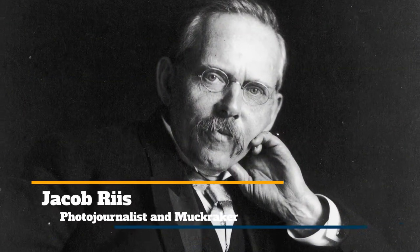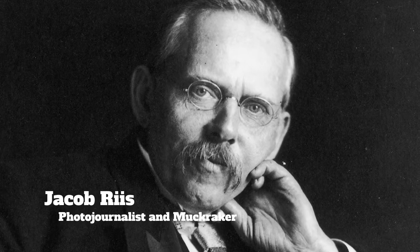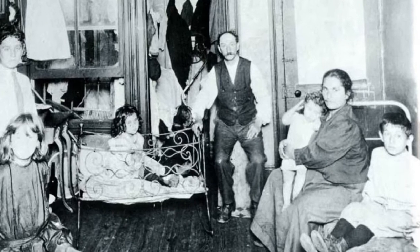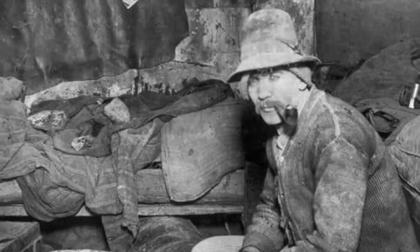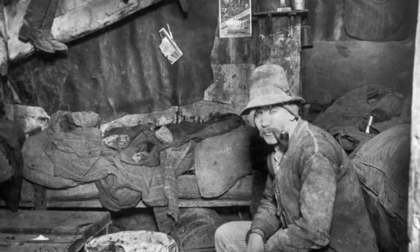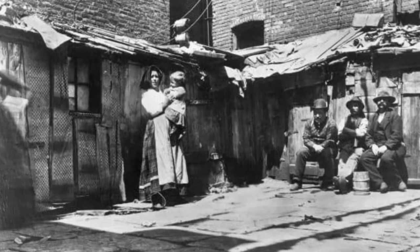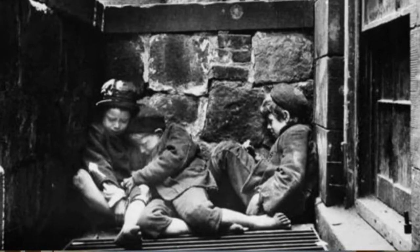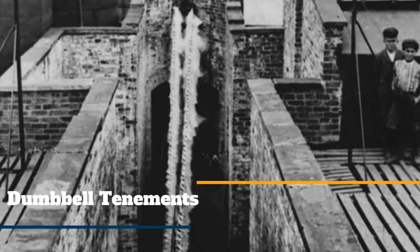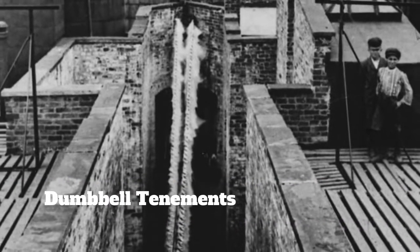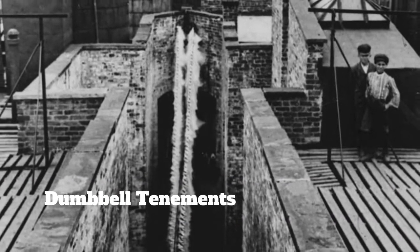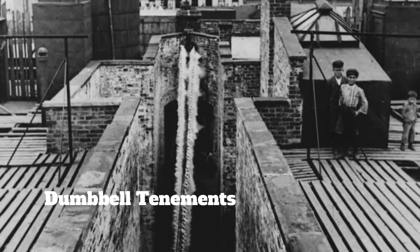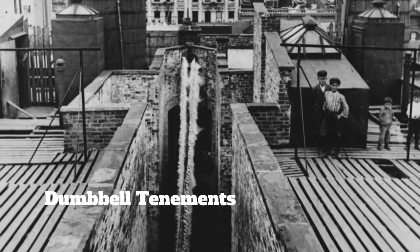Riis used flash powder to capture the crowded, dark, and dangerous living conditions facing people living in tenements, many of whom were newly arrived immigrants. In his 1890 book, How the Other Half Lives, Riis opened the eyes of middle and upper class Americans to the underside of city living. During the process of urbanization, poorer Americans had been crammed into dumbbell tenement houses that were largely unregulated and poorly maintained. These dumbbell tenements had been designed to pack as many people as possible into a very small living space.